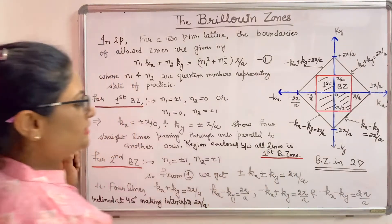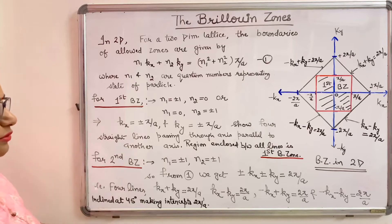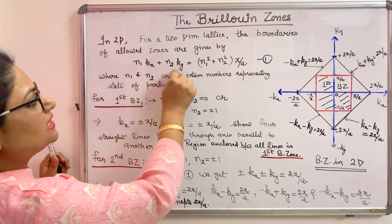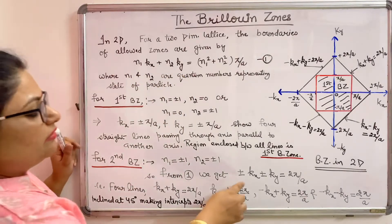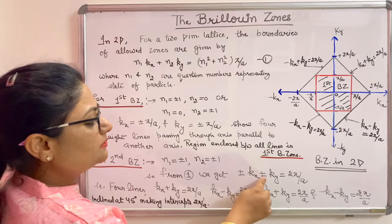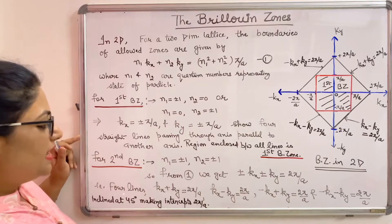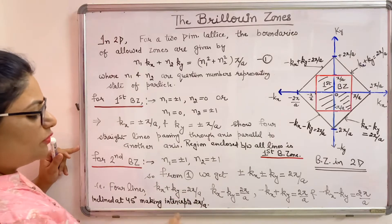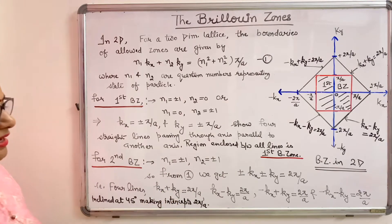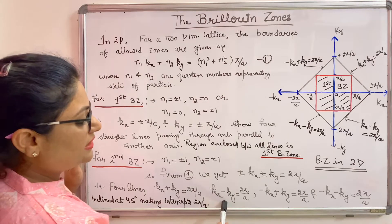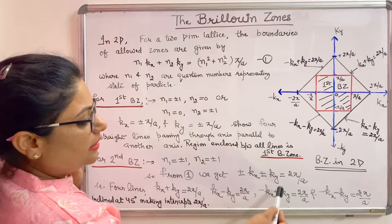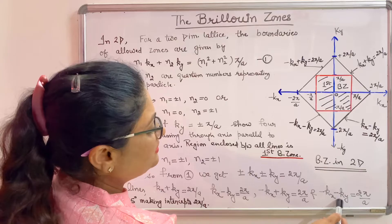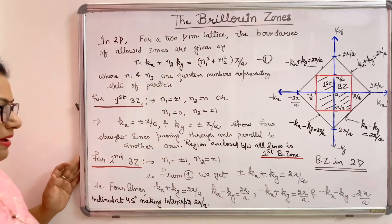For the second Brillouin zone, both n1 and n2 are plus or minus 1. Putting these values into the equation gives plus or minus kx plus or minus ky equal to 2 pi by a. This yields four equations: kx plus ky equal to 2 pi by a; kx minus ky equal to 2 pi by a; minus kx plus ky equal to 2 pi by a; and minus kx minus ky equal to 2 pi by a.